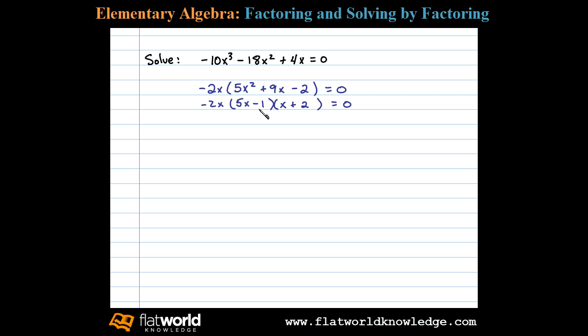Notice here negative 1 times 2 is negative 2, and the middle term can be gotten from the outer product 10x plus the inner product minus 1x. 10x minus x is 9x.